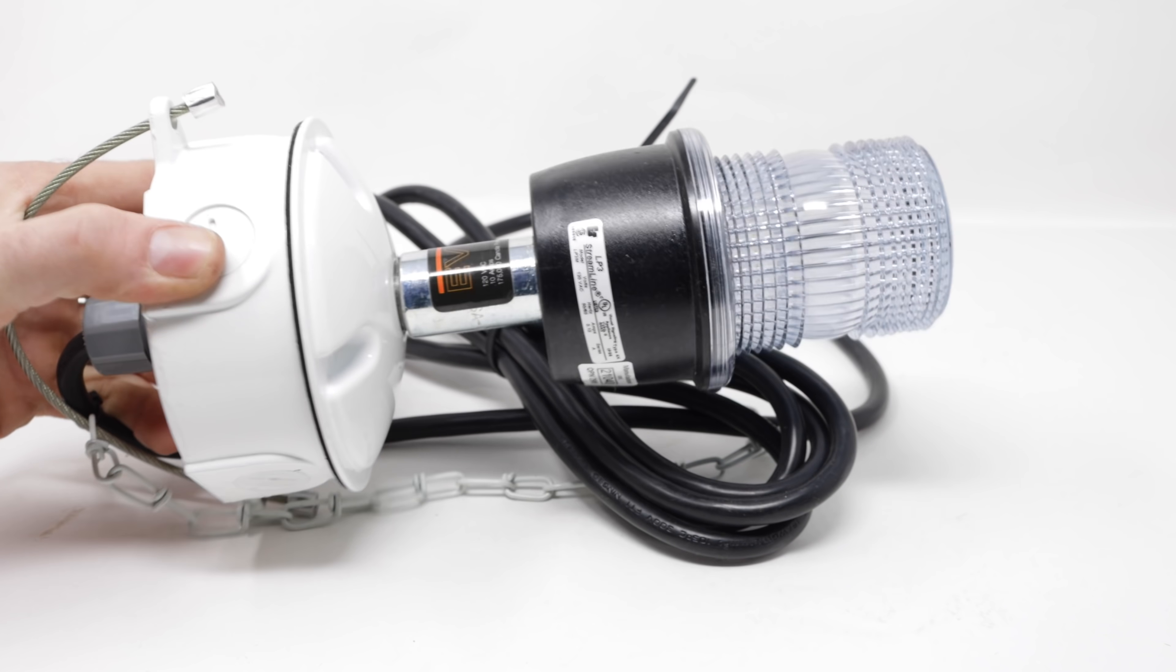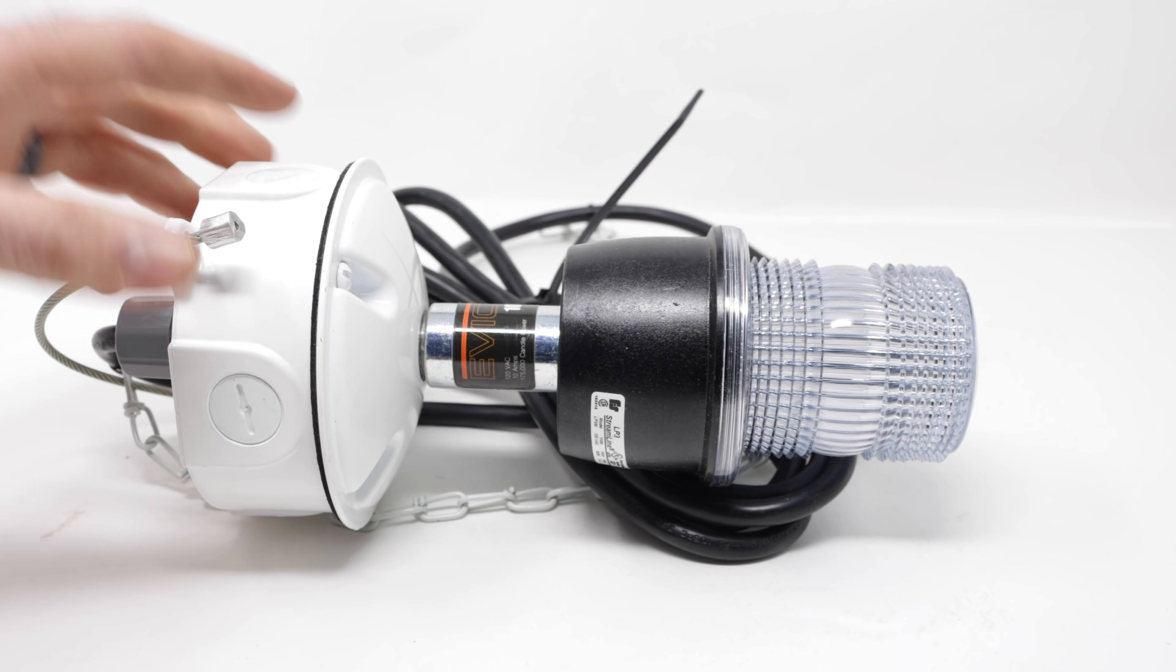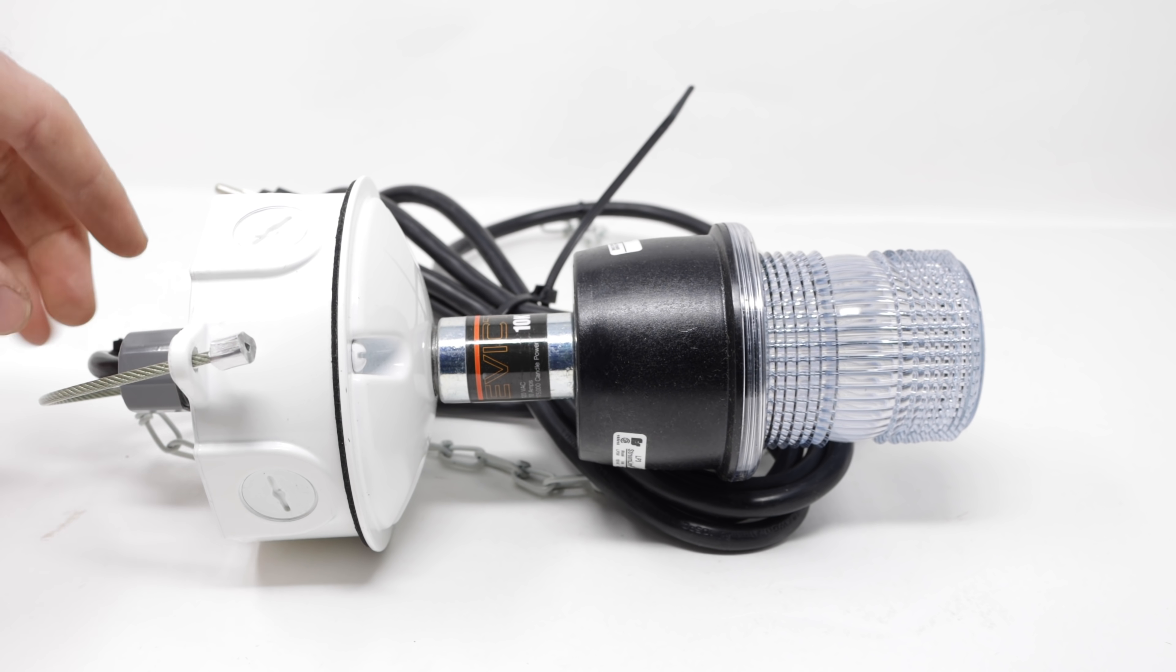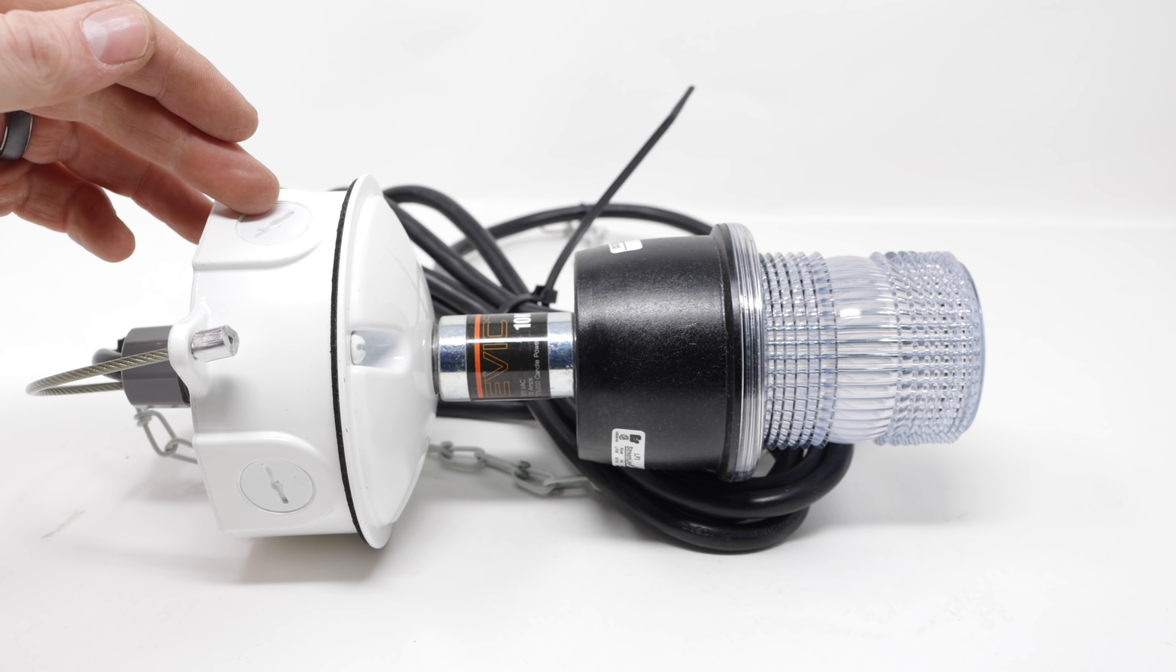Well, today for Mousetrap Monday, we're going to test out a product that claims to fix that problem. It's called the Evictor, and it's basically a strobe light you hang up in a dark space. It emits a pulse of light to keep all pests away. It seems like a good idea, but will it actually work?